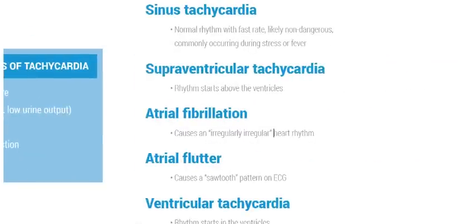There are five types of pediatric tachycardia. These include sinus tachycardia, supraventricular tachycardia, atrial fibrillation, atrial flutter, and ventricular tachycardia.